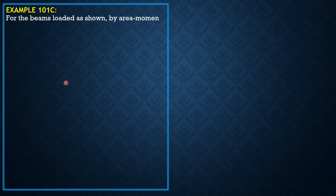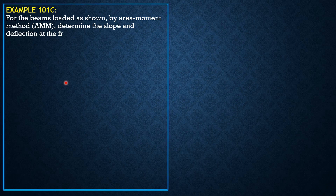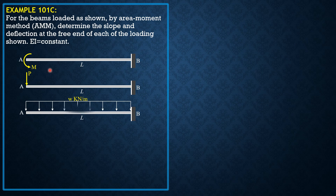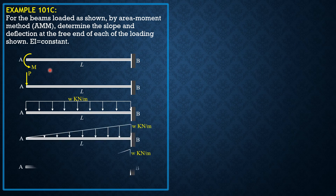For beams loaded as shown, determine the slope and deflection at the free end using the area moment method. EI is constant. Note that we previously solved this in Example 100C by the double integration method; this time let's solve it by the area moment method.